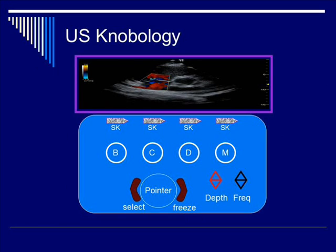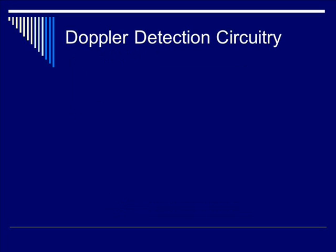One of the goals of this lecture is to teach you about panel nomenclature. This is a mock-up of a typical ultrasound system with a standard layout. You have B mode, color mode, D for Doppler, and M for M mode, along with buttons to control depth and frequency. For Doppler measurement, you first start with B mode, followed by activation or superposition of the D Doppler mode.